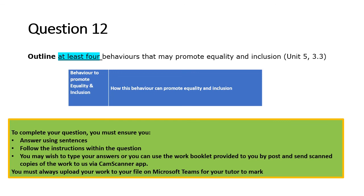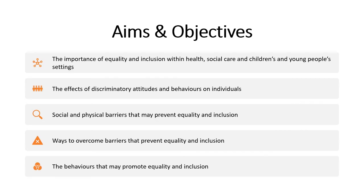Question twelve asks you to outline at least four behaviours that may promote equality and inclusion — no less than four. Write the behaviour in the left-hand box and then outline how that behaviour can promote equality and inclusion on the right-hand side, making sure you write in sentences. That brings you to the end of the session. You now know the importance of equality and inclusion, the effects of discriminatory attitudes and behaviours, social and physical barriers, ways to overcome them, and behaviours that promote equality and inclusion.